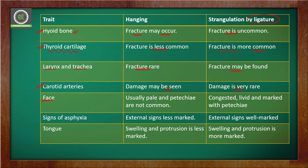The tenth trait is the face: in case of hanging, the face is pale and petechial hemorrhage patches are not very common. In case of ligature strangulation, the face is congested and livid, and petechial hemorrhage patches are present on the face.